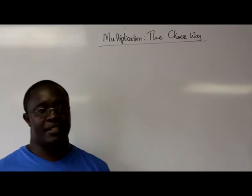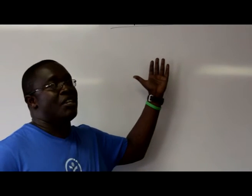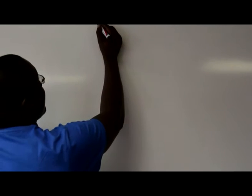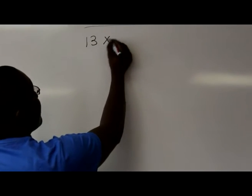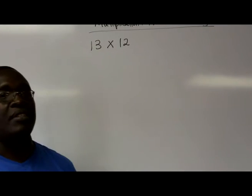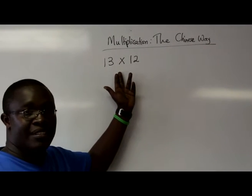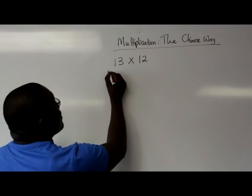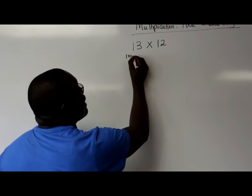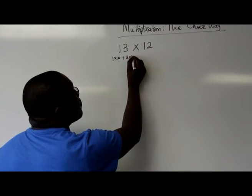So to illustrate their method, I'm going to try a two-digit number times a two-digit number. So the first one that I'll use is 13 times 12. As you know, we can break down 13 into tens and units. So in other words, we're saying this is 1 times 10 plus 3 times 1.